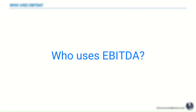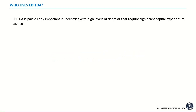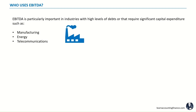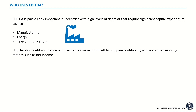The next question is who uses EBITDA? Well, EBITDA is particularly important in industries with high levels of debt or that require significant capital expenditures — for example, manufacturing, energy, and telecommunication. The high levels of debt and depreciation expense make it difficult to compare profitability across different companies within these industries, and using a metric such as net income does not help because it includes expenses such as depreciation, amortization, interest, and taxes.